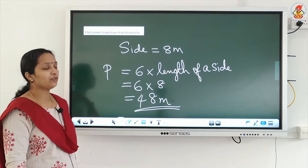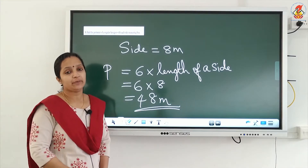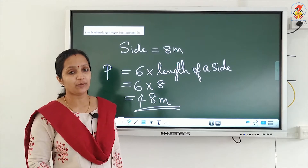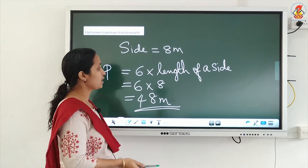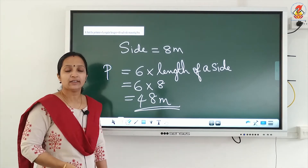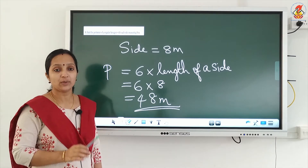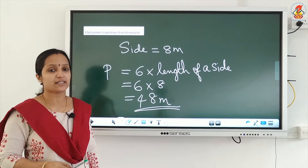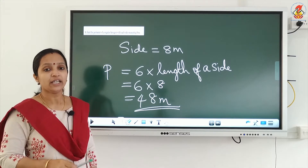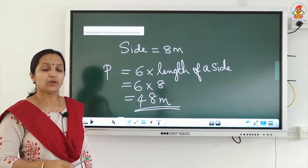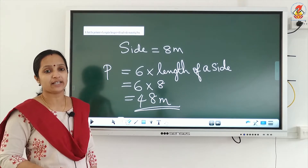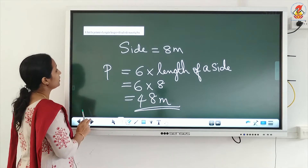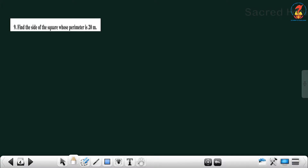We already studied the formula for finding the perimeter of a regular hexagon: 6 into the length of a side. A regular hexagon means all 6 sides and angles are equal in measure.